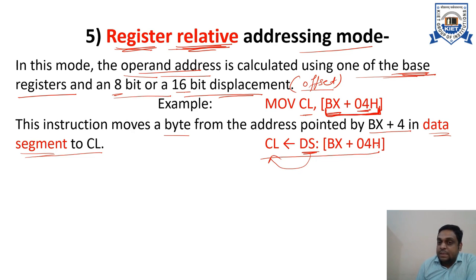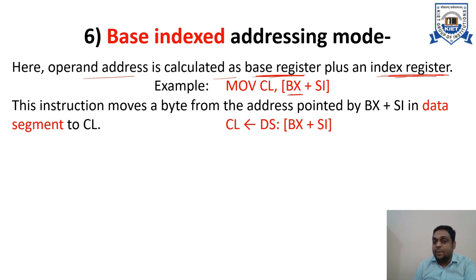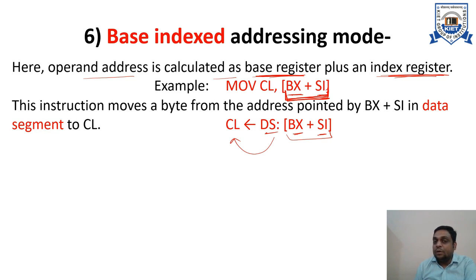Next is base index addressing mode. In this mode, the operand address is calculated as base register plus index register — the content of the base register added with the index register. For example, the base register is BX and the index register is either SI (source index) or DI (destination index). The content of both registers will be added and this gives you the effective address of the operand. So BX + SI, this address from the data segment, moves to register CL. This instruction moves a byte from the address pointed by BX + SI in the data segment to CL.